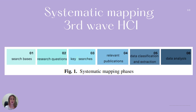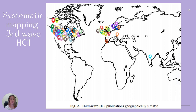On third-wave human-computer interaction, we made a systematic mapping on six bases: search base, research question, organized key search, relevant publications, data classification and extraction, and data analysis. This is part of my research results — I placed a dot for each publication — and we can identify that in Latin America there were no publications until now.